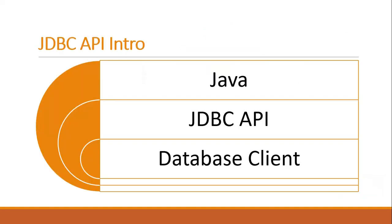As you can see in the picture, we have Java, the JDBC API, and a database client. What this picture explains is that JDBC is an API for the programming language Java which defines how a client may access a database. You can also say it is a Java-based data access technology used for Java database connectivity, defined by Oracle Corporation.